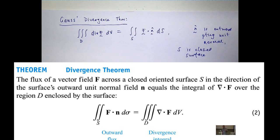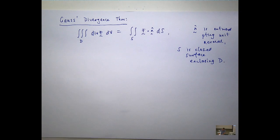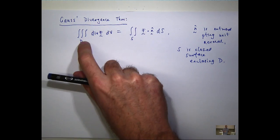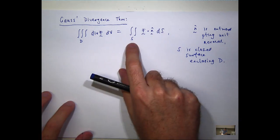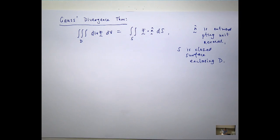So think of S as the closed surface enclosing the region D. So think of the filled sphere, right? That could be your region D. And the boundary would just be the actual sphere, the edge of it. That would be your surface S.